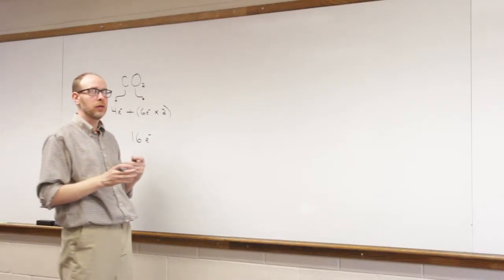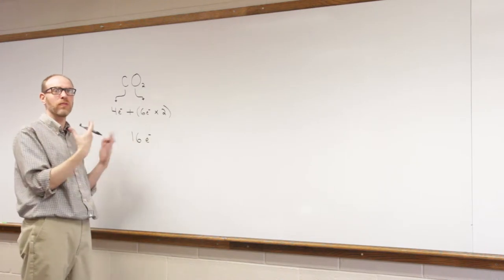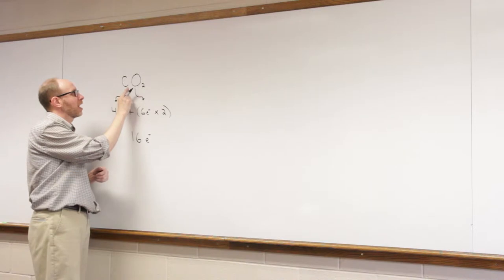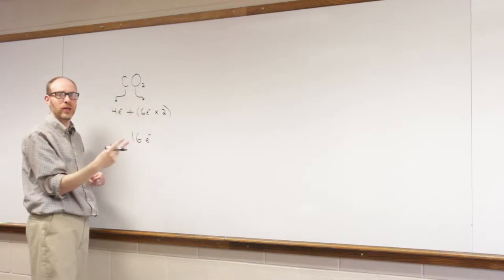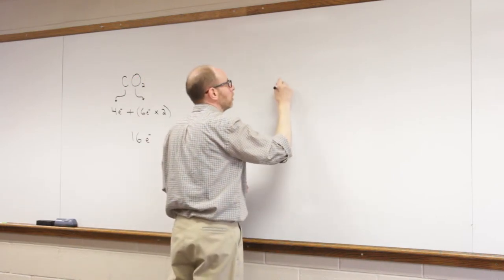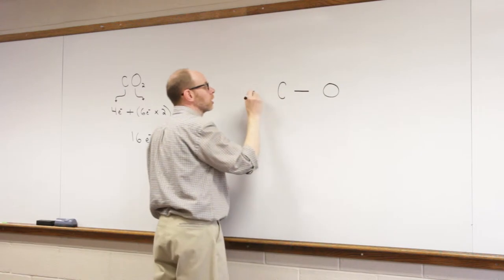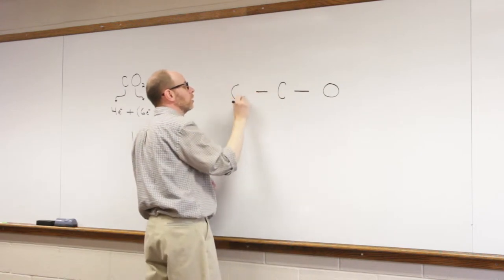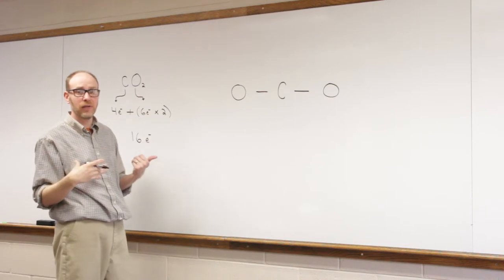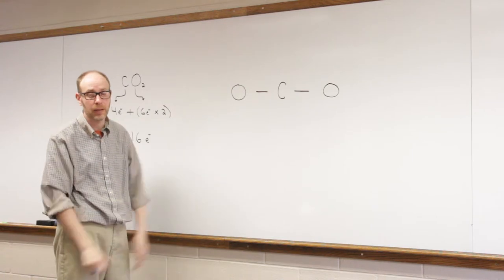So the next step, how do we determine what the central atom is? Well again, we've got two things going for us here. There's an atom where there's only one of the carbon, and we said carbon's always the central atom. So we're going to start with carbon in the center, two oxygen atoms, one on either side.